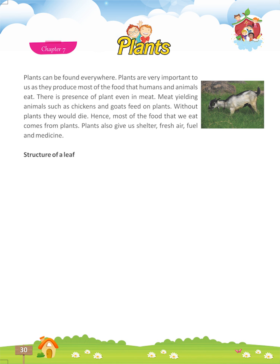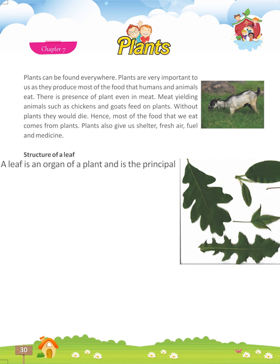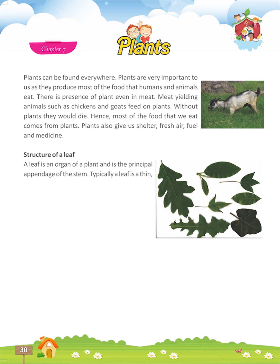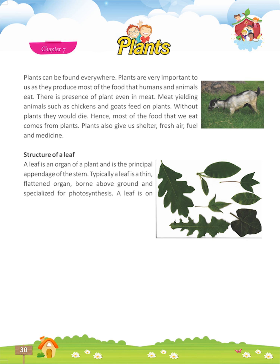Structure of a leaf. A leaf is an organ of a plant and is the principal appendage of the stem. Typically, a leaf is a thin flattened organ born above ground and specialized for photosynthesis. A leaf is an external part of a plant's stem.